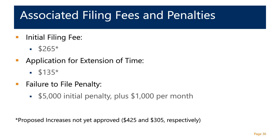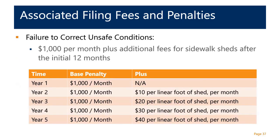If a building fails to file a report, there is a $5,000 initial penalty plus $1,000 per month until the report is filed. Additionally, if a building has unsafe conditions, there is a $1,000 per month fee for failure to correct. After the first year of failing to correct an unsafe condition while a sidewalk shed is in front of the building, there is a $10 per linear foot of shed charge, which increases by $10 every subsequent year. The DOB is emphasizing that buildings address unsafe conditions in a timely manner.